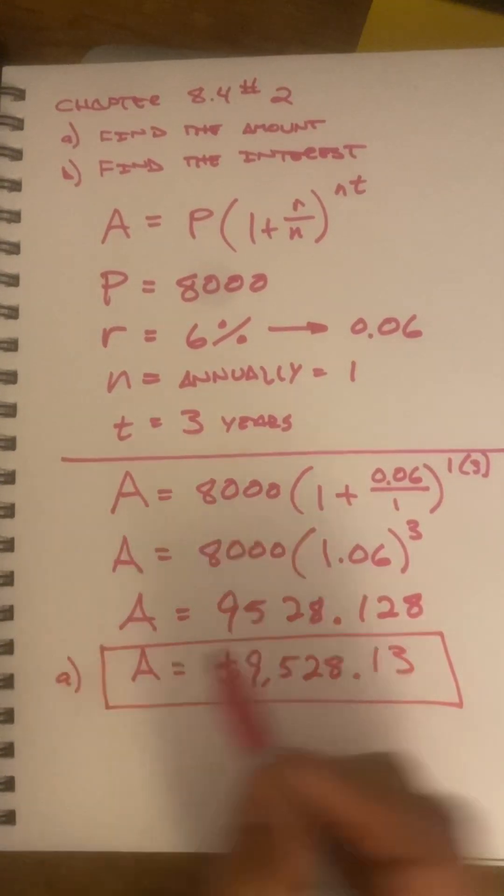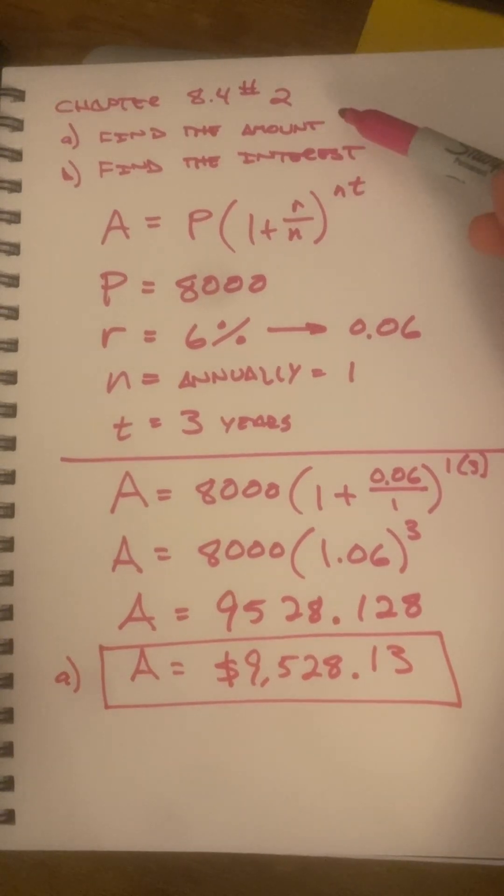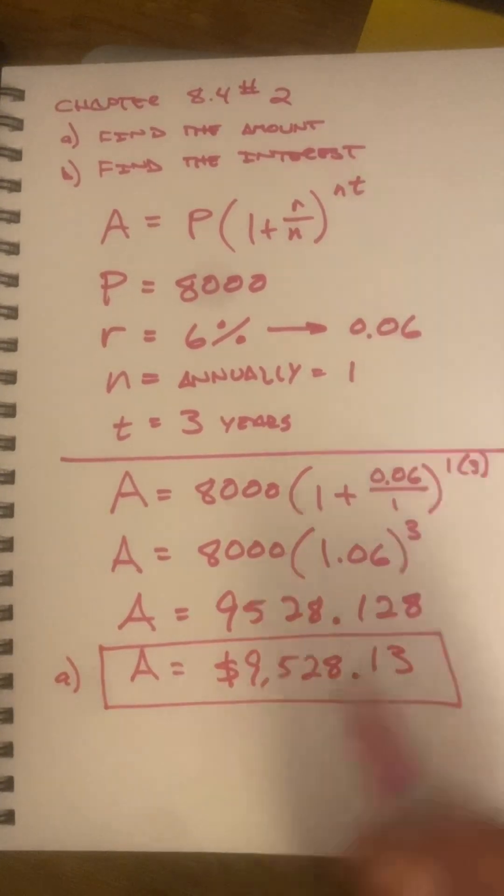That's actually just the first question. Find the amount. Part B says find the interest.